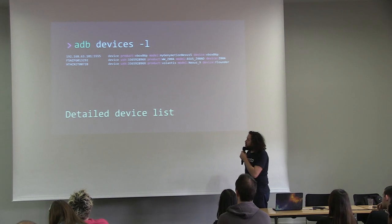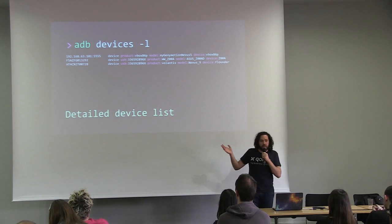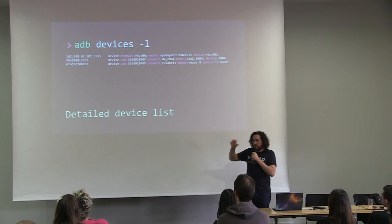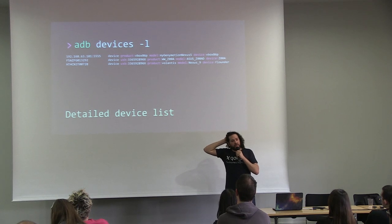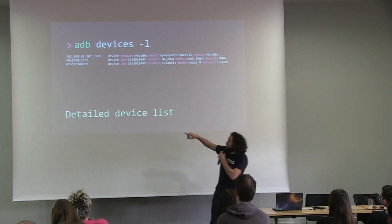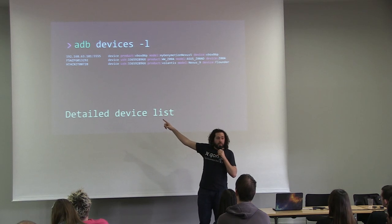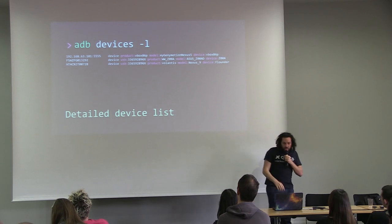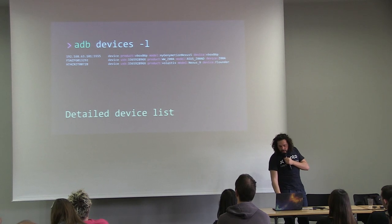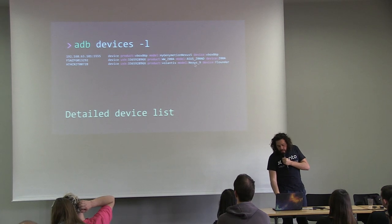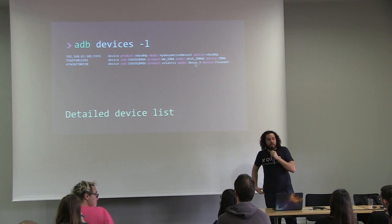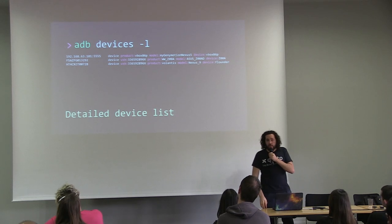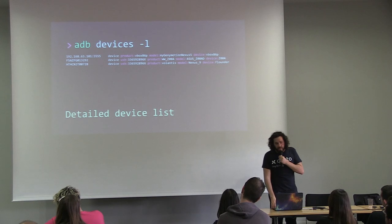Another useful thing: if you type `adb devices -l`, you will have more information than the simple `adb devices`. Sometimes when you're automating things in your company and want more than just a serial number, add the `-l` option. You'll see on the first line a Genymotion device, on the second line an Asus, and on the third line a Nexus 9. If you are scripting and want to discover connected devices, just parse the output of this.